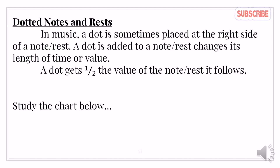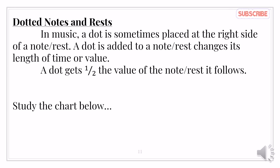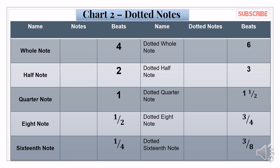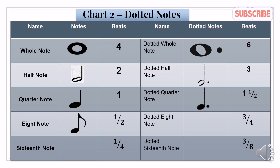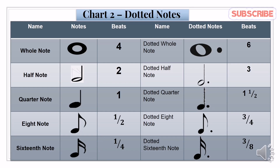Dotted notes and rest. In music, a dot is sometimes placed at the right side of a note or rest. A dot added to a note or rest changes its length of time or value — a dot gets one half the value of the note or rest it follows. Dotted whole note has 6 beats; dotted half note has 3 beats; dotted quarter note has 1 and a half beats; dotted eighth note has 3/4 beat; dotted sixteenth note has 3/8 beats.